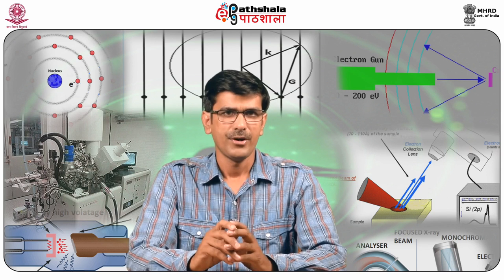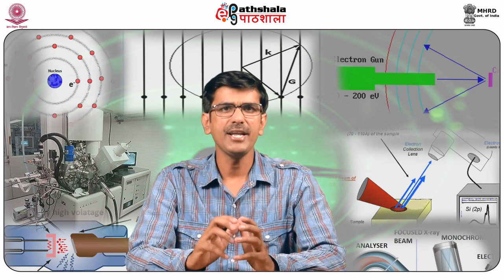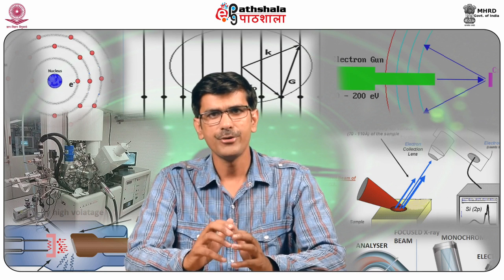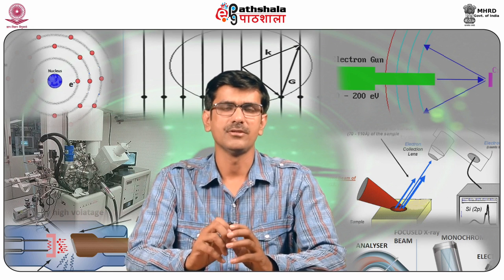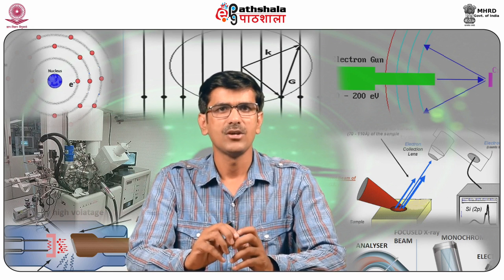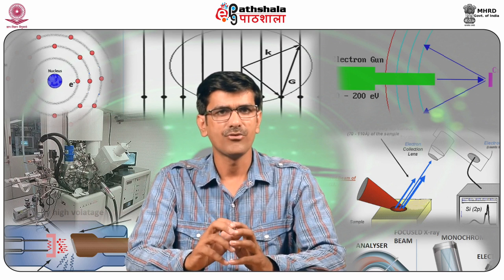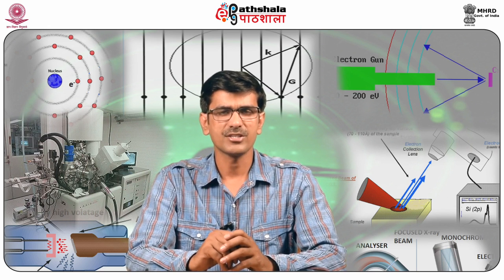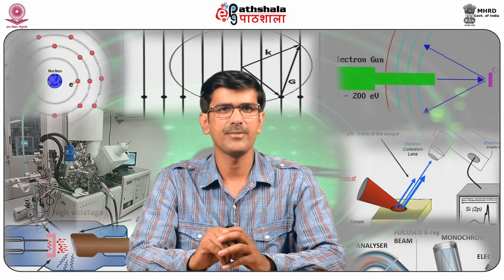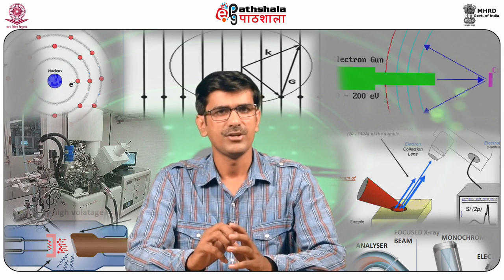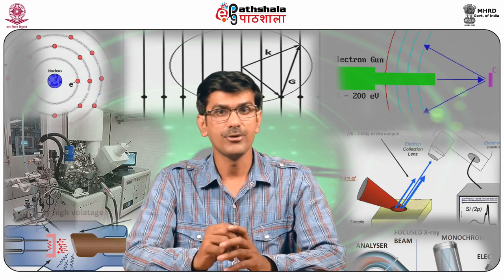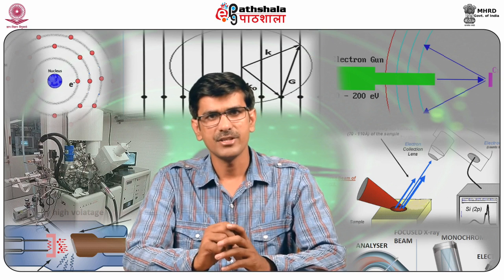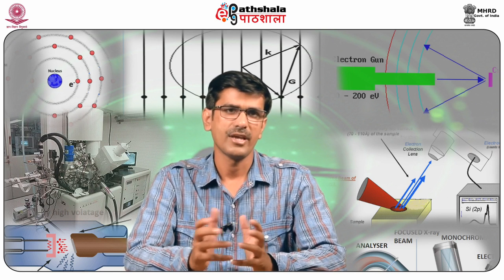Diffraction is defined as the bending of light as it passes around the edge of an obstacle or aperture into the region of geometrical shadow of the obstacle. The bending depends on the ratio of the wavelength of light to the size of the opening. According to Huygens' principle, diffraction is described as the interference of waves. Diffraction occurs with all waves, including electromagnetic waves, visible light, X-rays, radio waves, sound waves, water waves, etc.